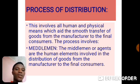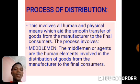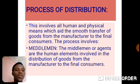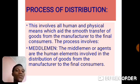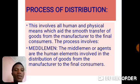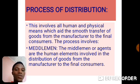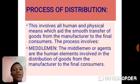Let's take a look at the process of distribution — what does it involve? This involves all human and physical means for the smooth transfer of goods from the manufacturer to the final consumers. These means include middleman, transportation, advertisement, and warehousing.